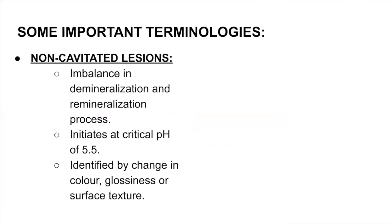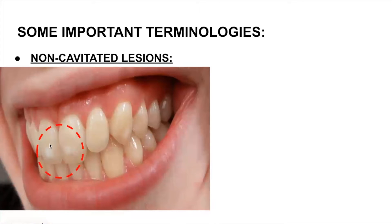To overcome these limitations, the American Dental Association came up with this classification. Let's talk about a few important terminologies. First, the non-cavitated lesion: non-cavitated lesions are basically imbalances in the demineralization and remineralization process. This balance keeps our tooth healthy, but if there's more demineralization it can lead to caries. It initiates at a critical pH of 5.5 — that's a very important point for the exams — and is identified by change in color, glossiness, and surface texture. When there's a change in structural integrity, a little bit of roughness, all of that is a non-cavitated lesion.